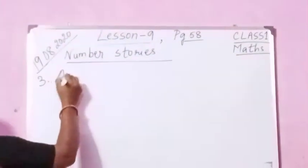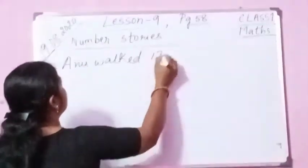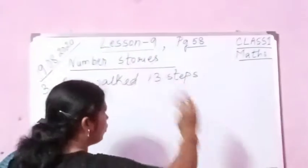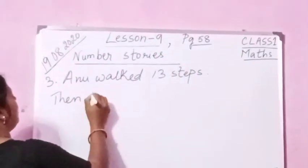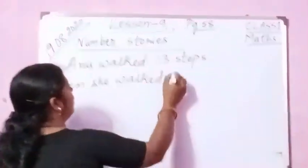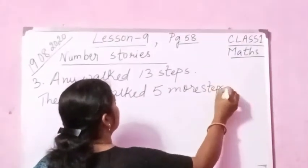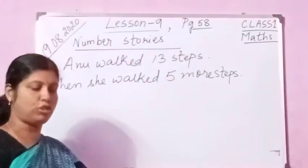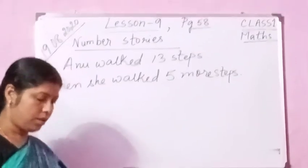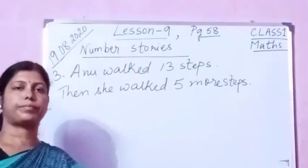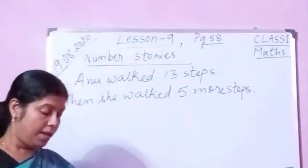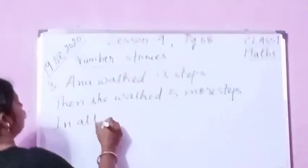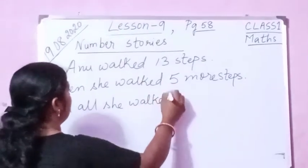Number 3. Anu walked 13 steps — you understand? The steps, like when you go to the roof, you have to climb the stairs or steps. Then she walked 5 more steps. Anu walked 13 steps, then she walked 5 more steps. In all she walked dash steps.